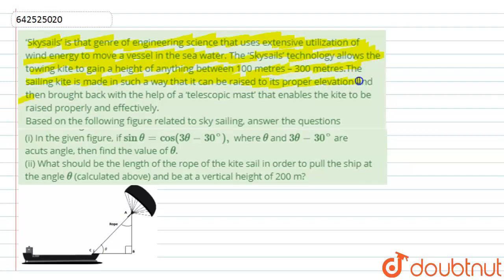The sailing kite is made in such a way that it can reach proper elevation and then brought back with the help of a telescope mast that enables the kite to be raised properly and effectively. Based on the following figure related to sky sailing, answer the questions.